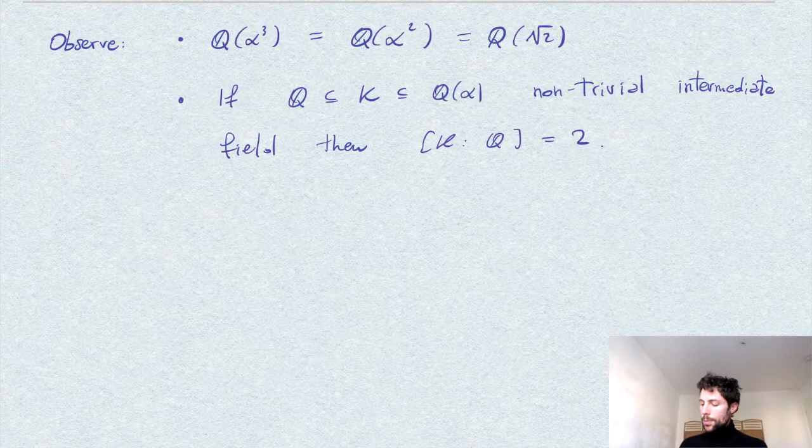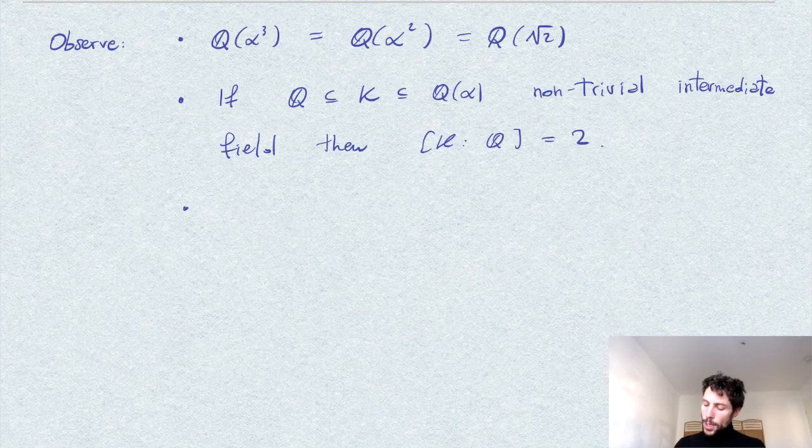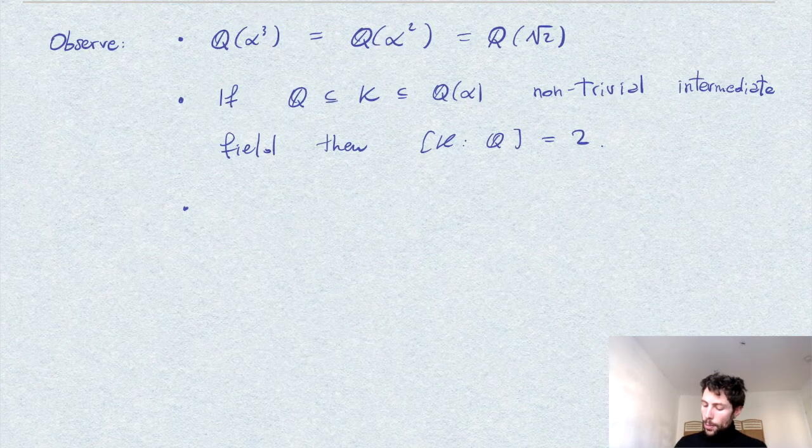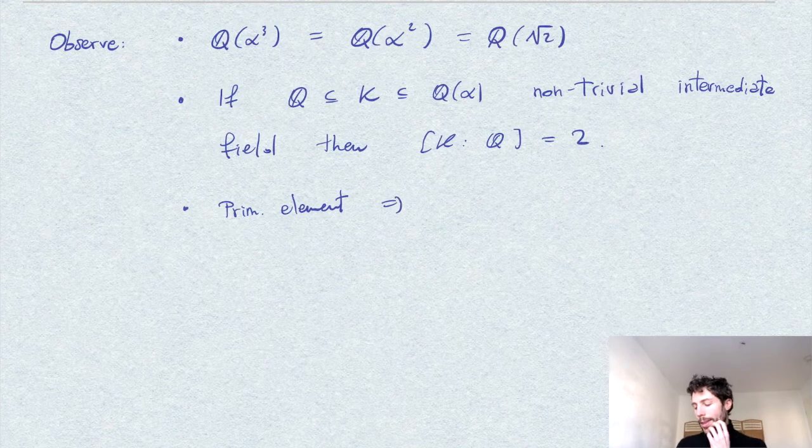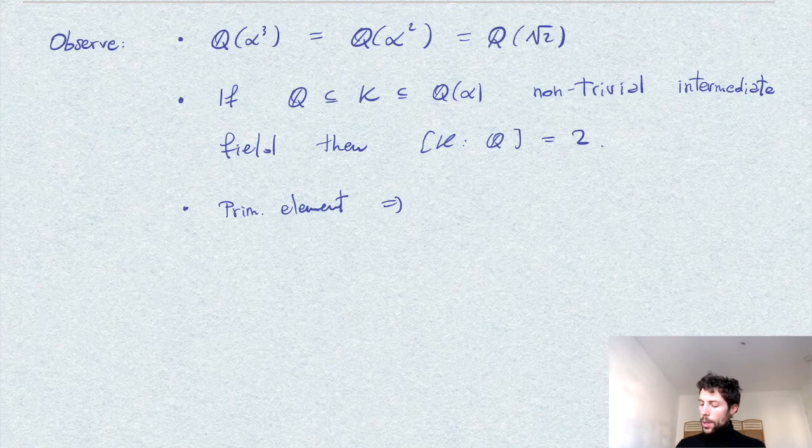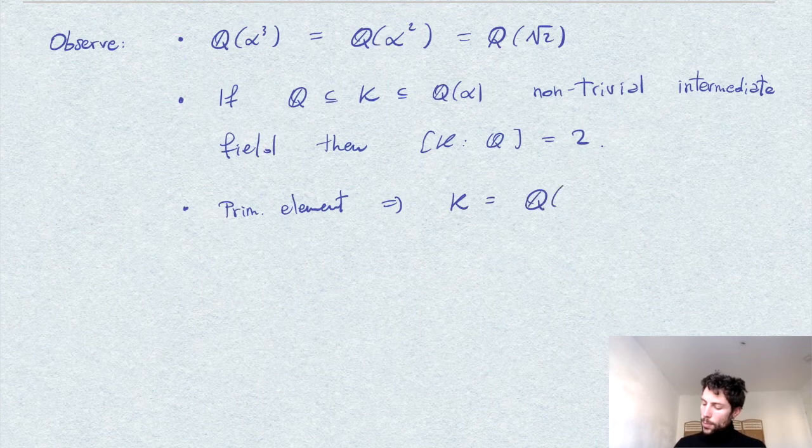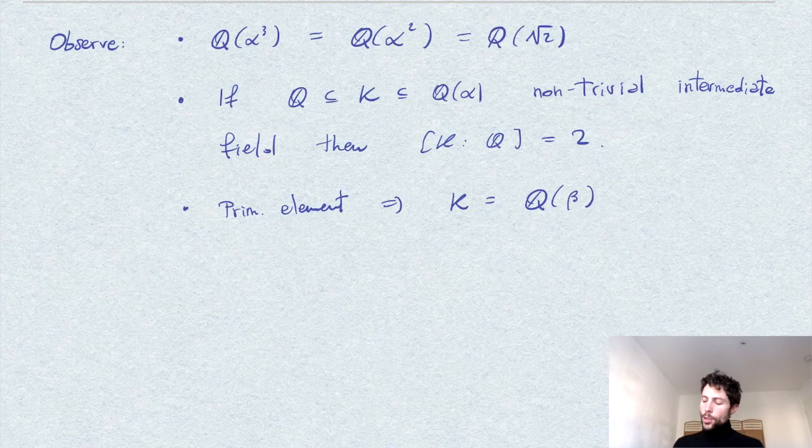So it's a quadratic extension. If we want to use something more powerful, we can apply the primitive element theorem and conclude that there are only finitely many extensions between K and Q, and therefore K is a simple extension: K = Q(β) for some β.